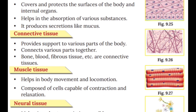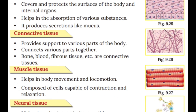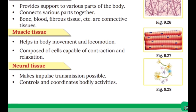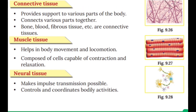Connective tissue provides support to various parts of the body and connects various parts together. Examples include bone, blood, and fibrous tissue. Muscle tissue helps in body movement and locomotion; it is composed of cells capable of contraction and relaxation.